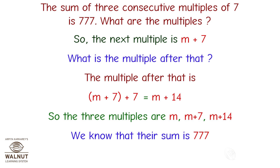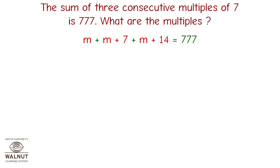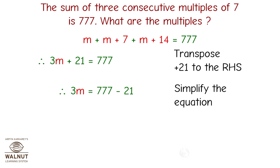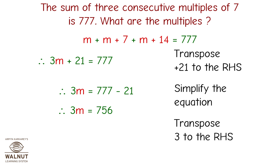We know that their sum is 777. Putting that in an equation: m plus m plus 7 plus m plus 14 equals 777. Therefore 3m plus 21 equals 777. Simplifying: 3m equals 756.